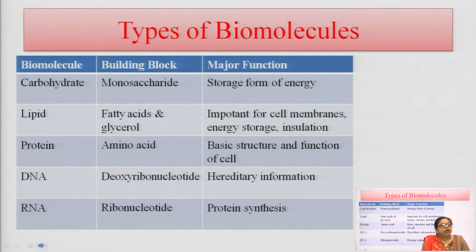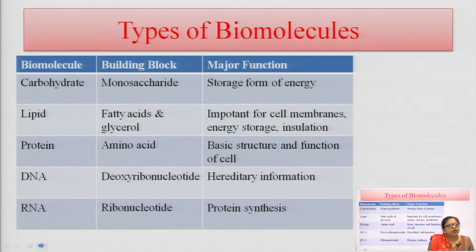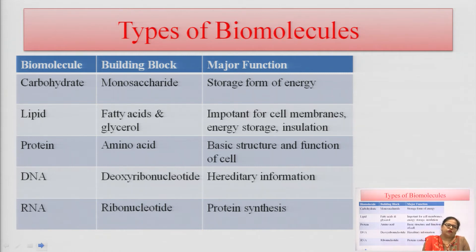The second is lipid. The building block or monomer unit of lipids is fatty acids and glycerol. These fatty acids and glycerol are joined together to form lipids, and when hydrolysis occurs, lipids are converted back into fatty acids and glycerol. The main biological importance of lipids is that they are important for cell membrane formation, energy, storage in our body, and insulation — meaning giving the body protection from cold and controlling the temperature of our body.